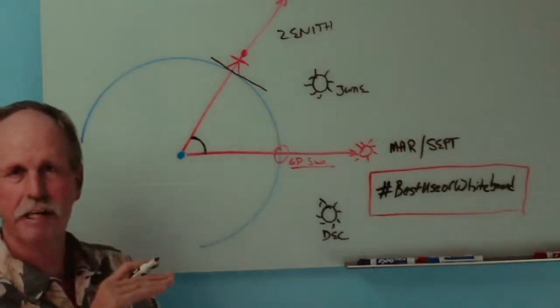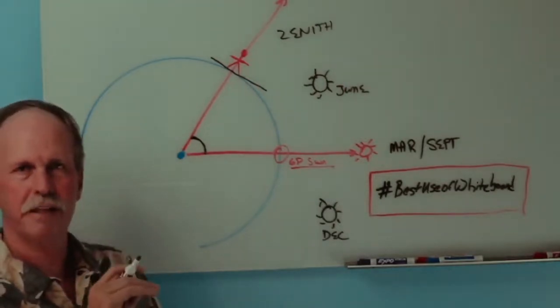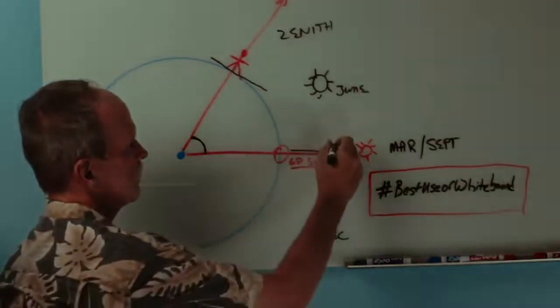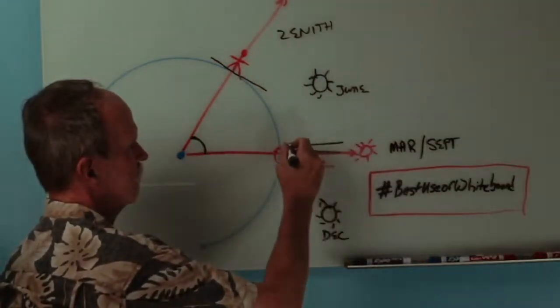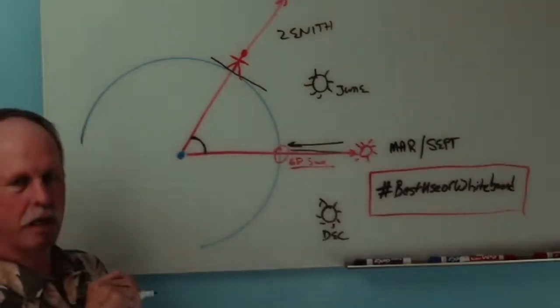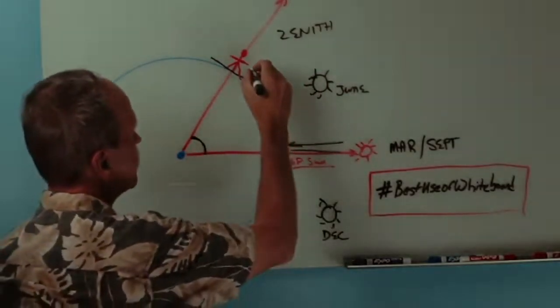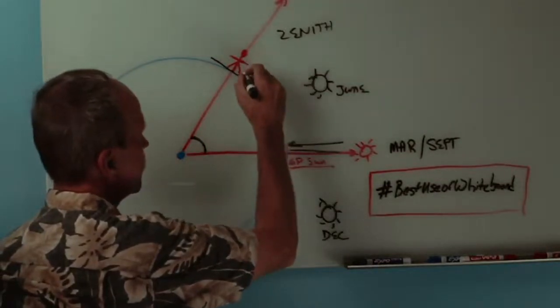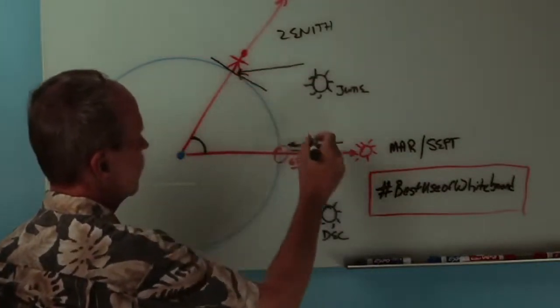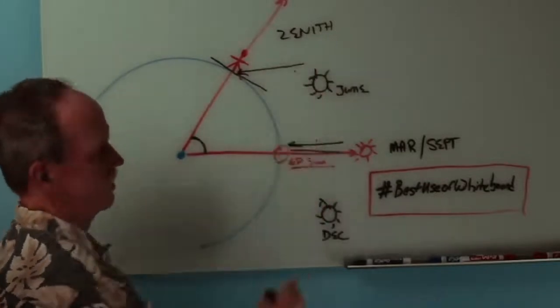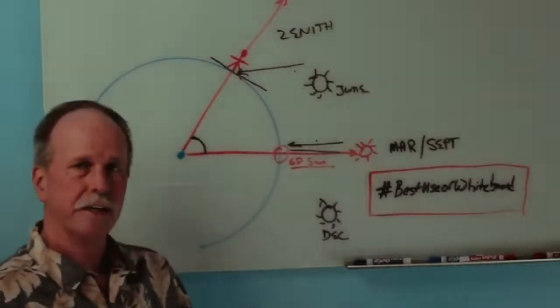Now, what that means is that the rays of the Sun coming to the equator are coming from that direction, from the zenith. That the rays of the Sun hitting our sextant will be parallel to the rays of the Sun at the equator.